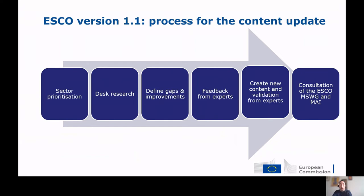The content update process started with what we call sector prioritization. The Commission identified a number of key sectors where to focus the update of ESCO, which are the sectors most relevant for the DPMC. For each of these sectors, desk research was performed in order to identify the main trends in skills, competencies, and occupations that emerged in the labor market since the release of ESCO version 1.0, which was released in 2017. Based on this research, it was possible to define gaps between ESCO version 1.0 and the evolution of the labor market, and scope improvements. Very important also was the feedback received from domain experts that supported the Commission in analyzing data coming from the labor market.